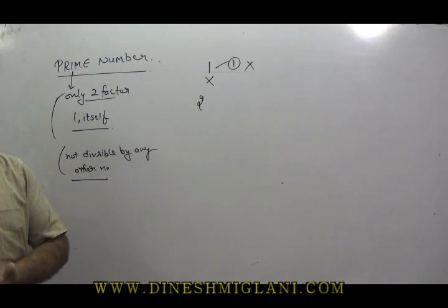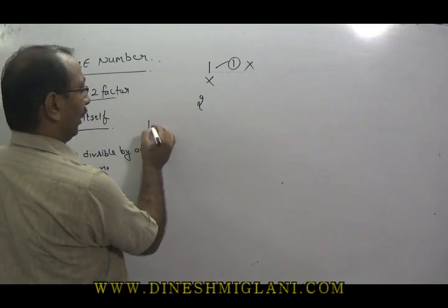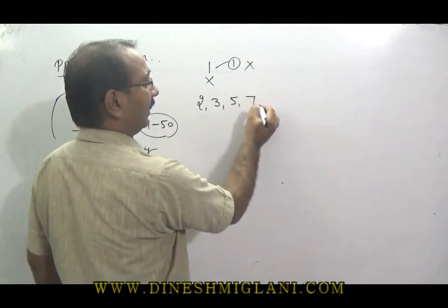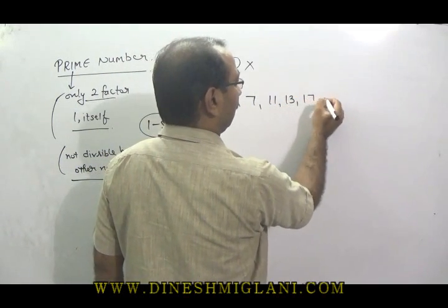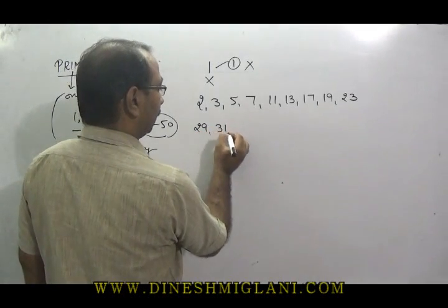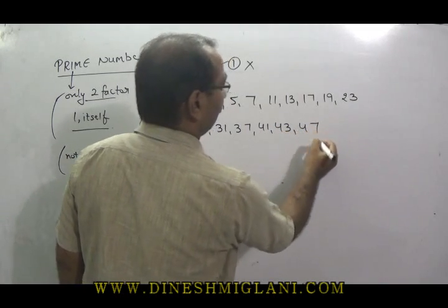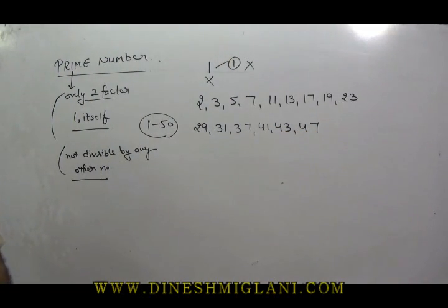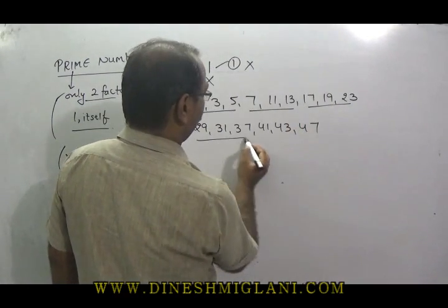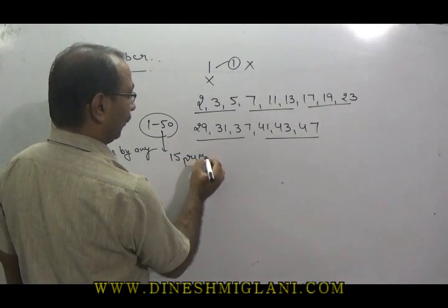Let us understand the counting of prime numbers. First, we count from 1 to 50: 2, 3, 5, 7, 11, 13, 17, 19, 23, 29, 31, 37, 41, 43, 47. So from 1 to 50, all these are the prime numbers. When you count them — 3, 6, 9, 12, and 15 — from 1 to 50 there are 15 prime numbers.